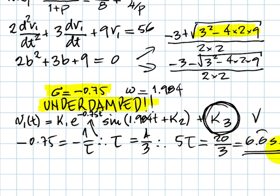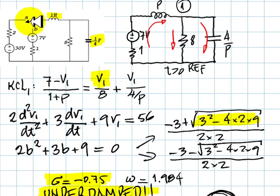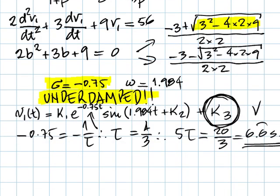That is 6 and 2 thirds of a second, and that is the answer to the second part of the question. That circuit needs 6 seconds and 2 thirds of a second to reach steady state after the switch is moved to position B. And that is the answer. Thank you very much.